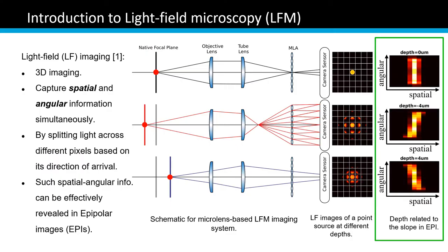Light field microscopy captures both spatial and angular information simultaneously. Such spatial and angular information can be revealed in the epipolar image, which we call epi.